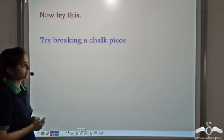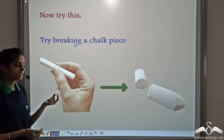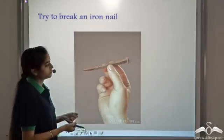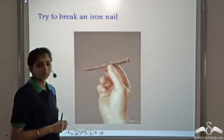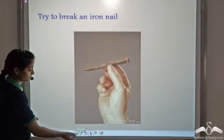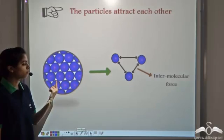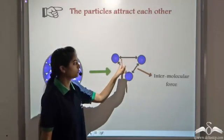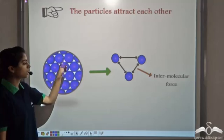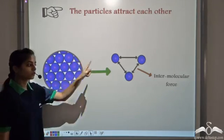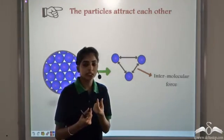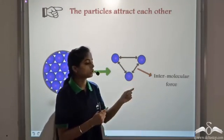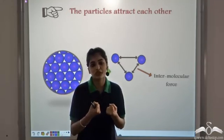Take a chalk piece and try to break it — it's very easy to break, you can even break it with one finger. Now try to break an iron nail — it's really difficult, even if you use both your hands you might not be able to break it. This is because the particles of matter attract each other by a force known as inter-molecular force. In the case of chalk, this force is weak, which is why we can break it. But in the case of an iron nail, the inter-molecular forces are very strong.